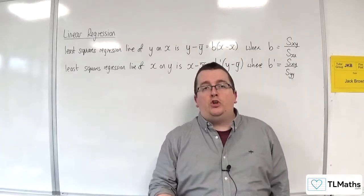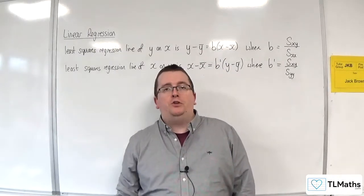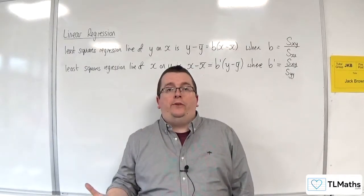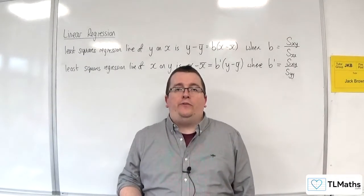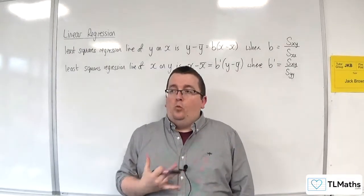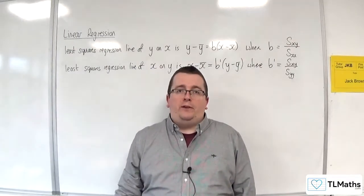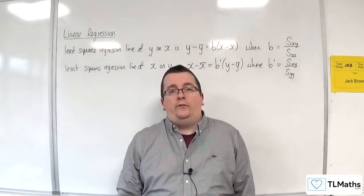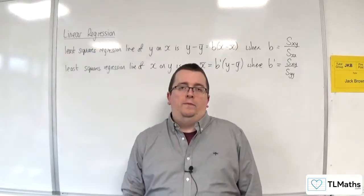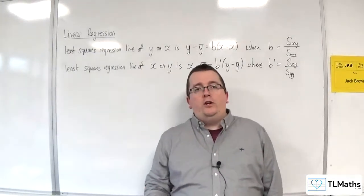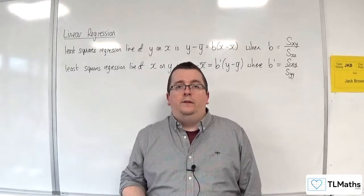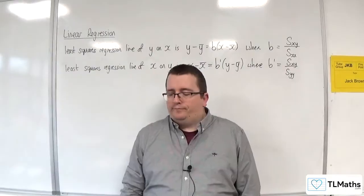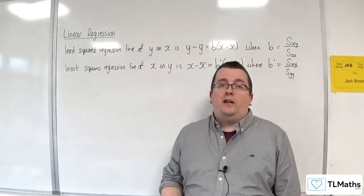Following on from the previous section on the product moment correlation coefficient, we move into linear regression. When you met scatter graphs as part of GCSE maths, one of the things you would have to do is draw a line of best fit. The regression line you can imagine is the best line of best fit that you could draw, and we can calculate the equation of that line to make predictions. That's essentially what we're doing here.